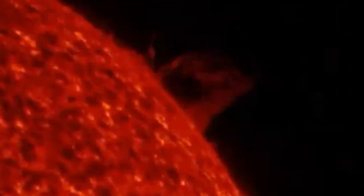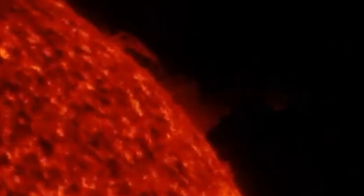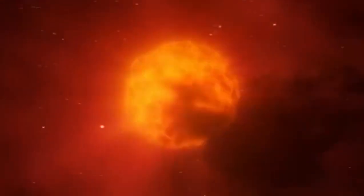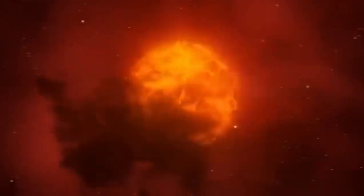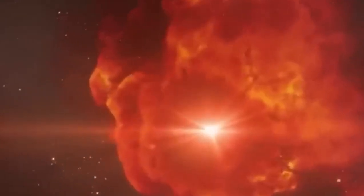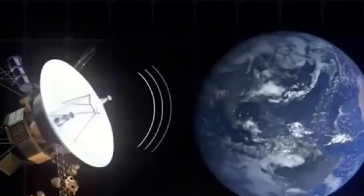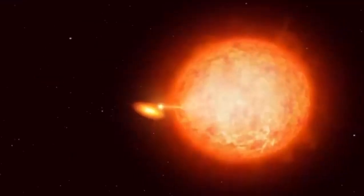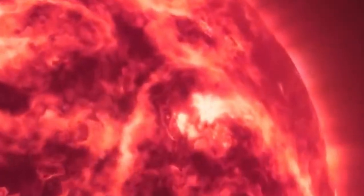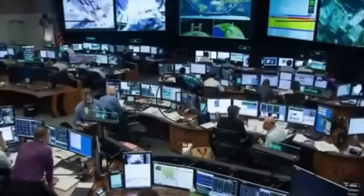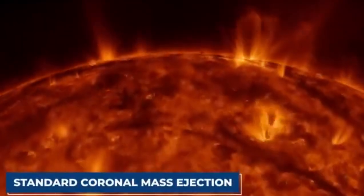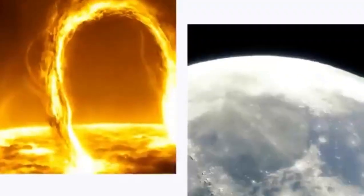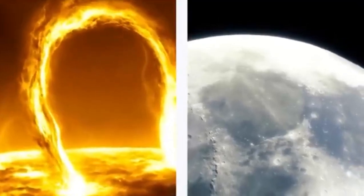As a star exhausts its hydrogen fuel in the core, it expands into a red giant, swelling to hundreds or even thousands of times its original size. Betelgeuse, with a diameter approximately 764 times that of the sun, exemplifies this stage. The fate of a massive star culminates in a supernova, a spectacular explosion that briefly outshines an entire galaxy. There are two primary types of supernova: type 1 and type 2. Betelgeuse, as a red supergiant nearing the end of its life, has drawn significant attention due to its recent dimming episodes.